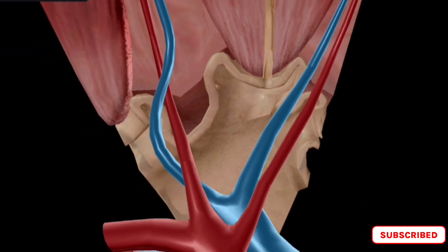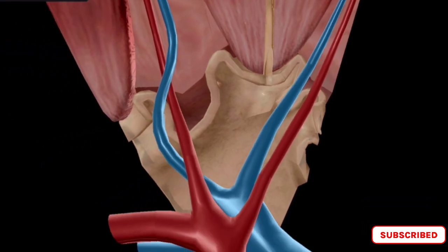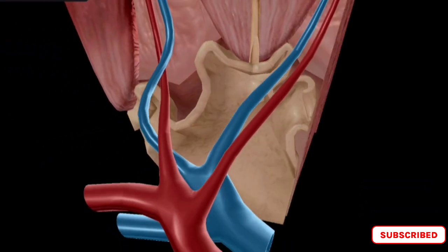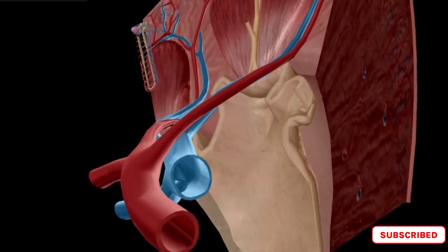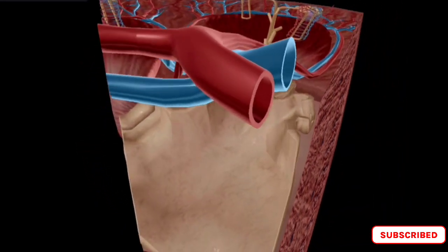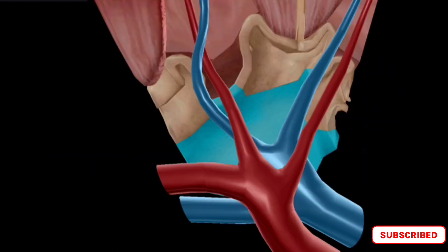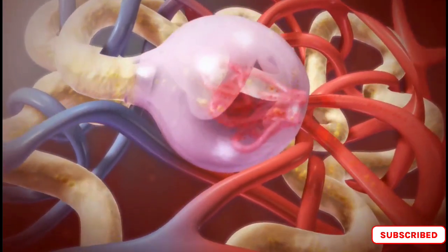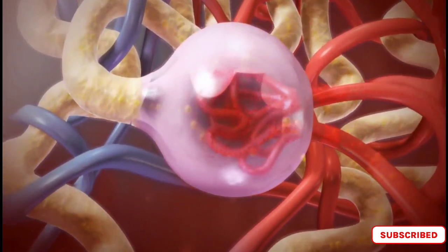From the renal pelvis, urine flows down the ureter and into the urinary bladder. When the bladder is full, urine is eliminated from the body through the urethra during the process of micturition. Micturition, also known as urination, is the process of voiding urine from the body.